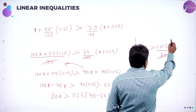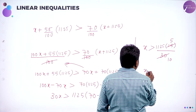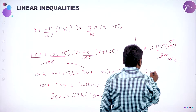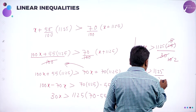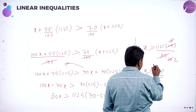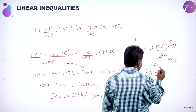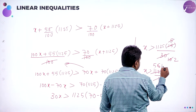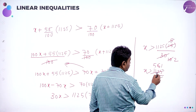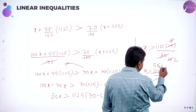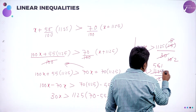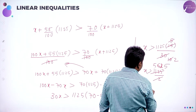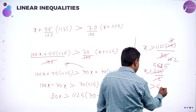Divided by 30. So 70 minus 55 gives you 15. Simplify further: x greater than 1125 into 15, divided by 30. So x is greater than 1125 by 2, which gives x greater than 562.5 liters.